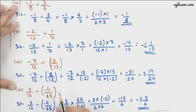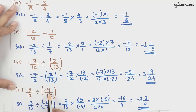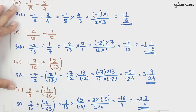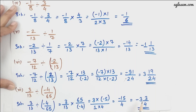Moving further, we have 3/13 divided by (-4/65). We change the sign and reciprocal the value, giving us 3 × (-65/4) / 13, which simplifies to -15/4. The value is -3¾.